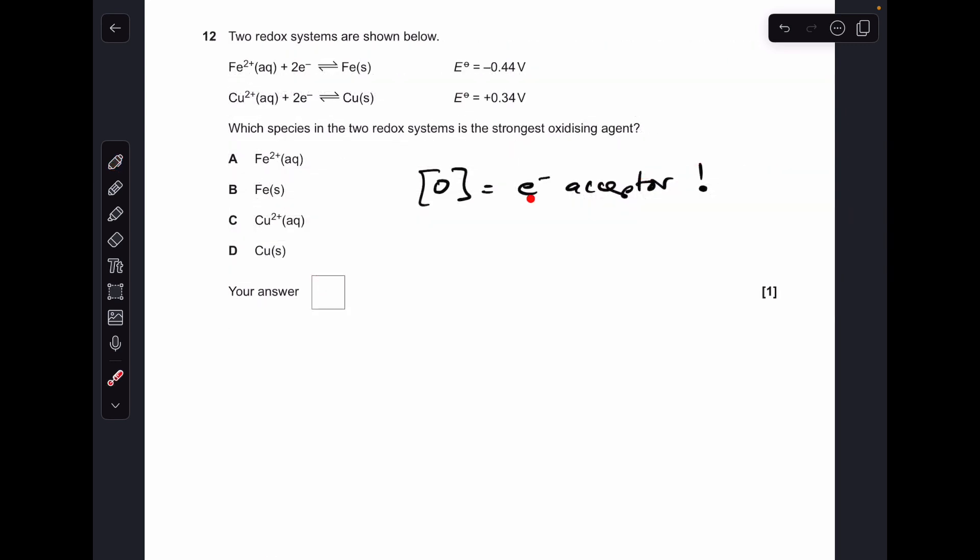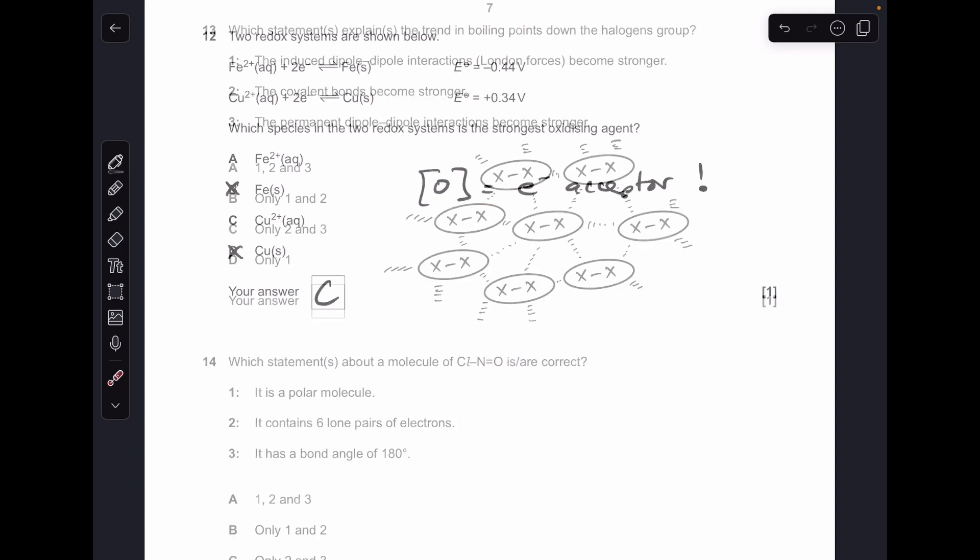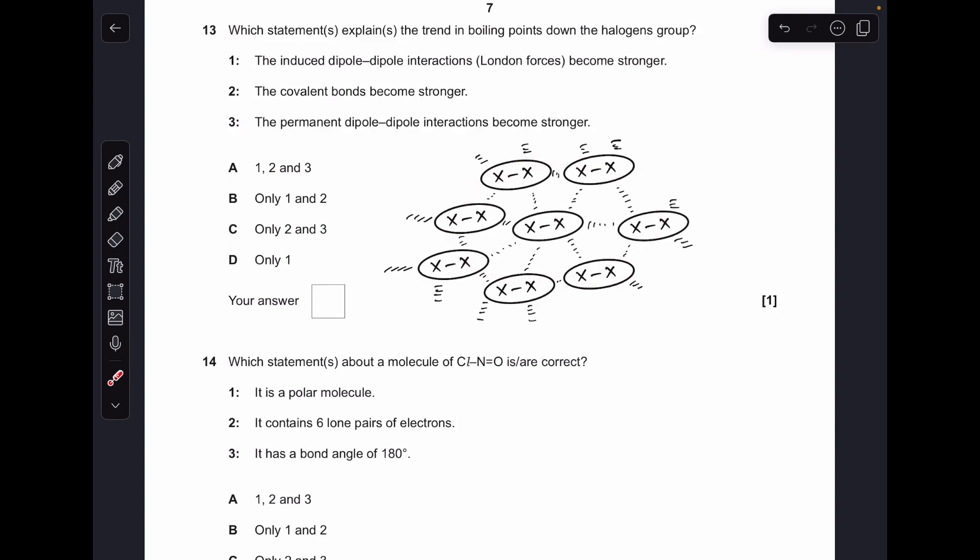Moving on to 12. So obviously we've got another definition for oxidizing agent. They are electron acceptors. So we're interested only in the species on the left-hand side of these two systems because they are the electron acceptors. So that means straight away I can rule out iron and copper because they're electron donors, they're reducing agents. So the strongest oxidizing agent is the one that can go forwards the most readily, and it's this copper 2 plus system because it's got the more positive electrode potential. So C was the answer.